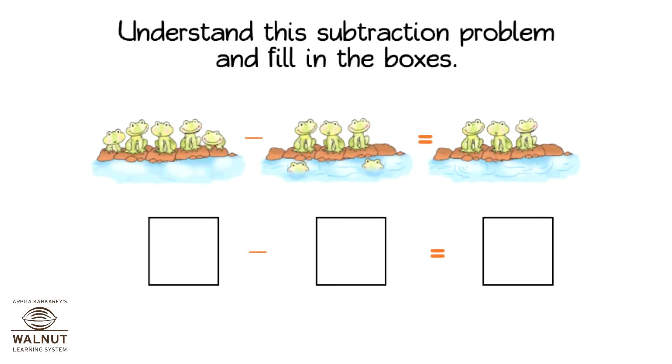There are 5 frogs on a log. 2 jump into the water. How many frogs on the log? 5 minus 2 is equal to 3.